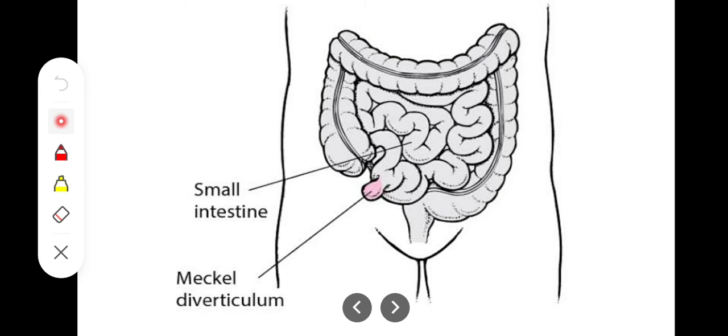So this Meckel's diverticulum is basically a remnant of the vitelline intestinal duct and it's having a length of two inches. It's caliber is the same as that of ileum. Mostly it's free, but sometimes it can get attached to the umbilicus or any mesentery or any structure of the abdomen with fibrous bands.